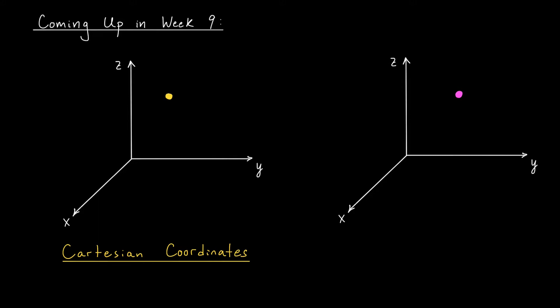You see, up to now, we've always described points in R3, for example, using their XYZ coordinates, their Cartesian coordinates. We can reach this point by moving X units in this direction, Y units in this direction, and Z units in this direction.